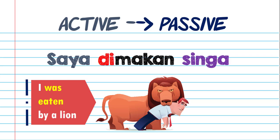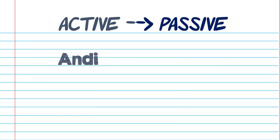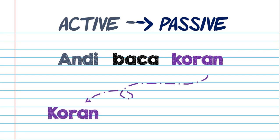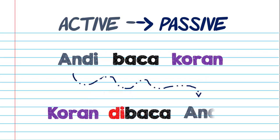Another example: 'Andi baca koran,' meaning 'Andi read a newspaper.' If we want to change this sentence to be a passive sentence, we can say 'koran dibaca Andi,' which means 'the newspaper is read by Andi.'